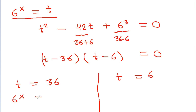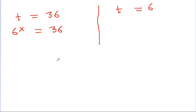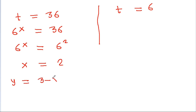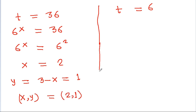Since t equals 6 power x: when t equals 36, we have 6 power x equals 36, which is 6 squared, so x equals 2. Then y equals 3 minus x equals 3 minus 2 equals 1. When t equals 6, we have 6 power x equals 6, which is 6 power 1, so x equals 1.